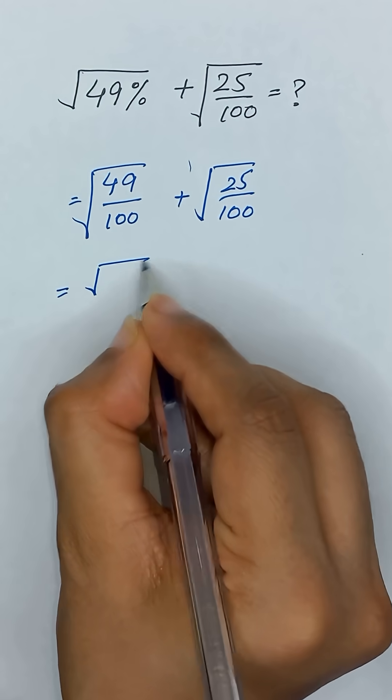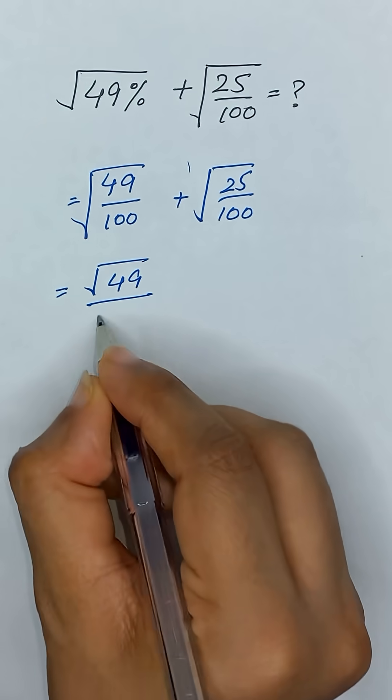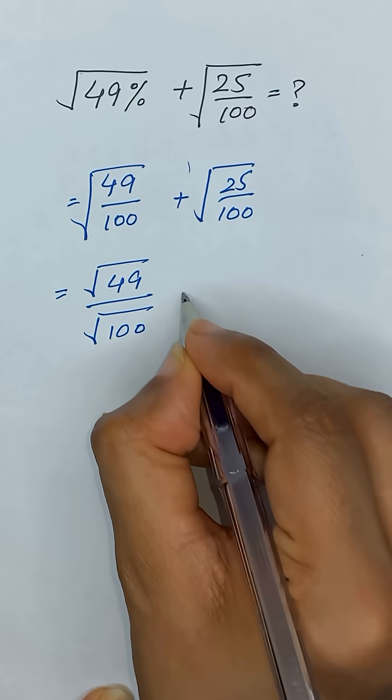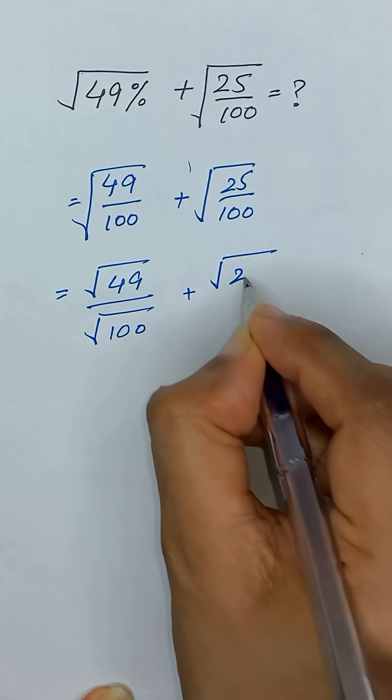Now we can write it as square root of 49 divided by square root of 100 plus square root of 25 divided by square root of 100.